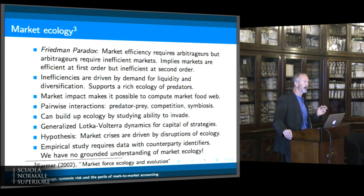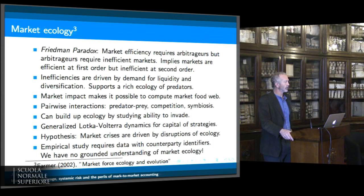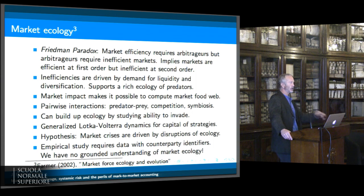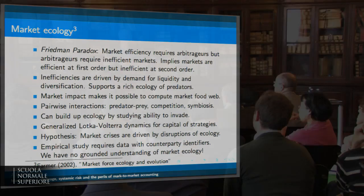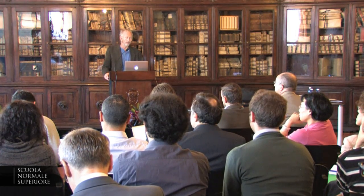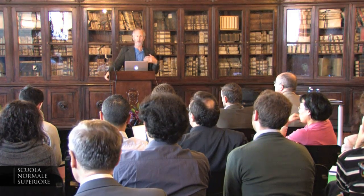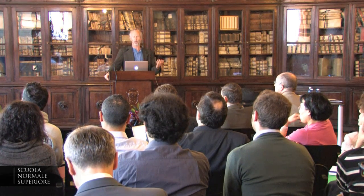The way I think about these inefficiencies is that they're driven by demand for liquidity and diversification, and this supports a rich ecology of predators — most of the investment banks and hedge funds and so forth. As we know from ecology, an ecology of predators is very important in keeping the ecosystem organized in a sensible way. A predator in this sense doesn't mean something bad, it means something good. Market impact, as I showed in a paper from 2002, allows you to compute the market food web because you can reduce things to pairwise interactions — you can ask, if this agent gets a little more money to invest, how does this affect all the other players in the market?